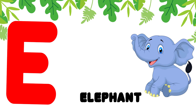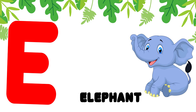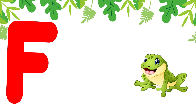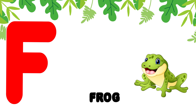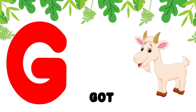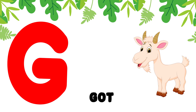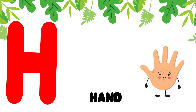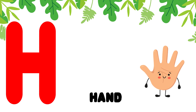E is for elephant. E, elephant. F is for frog. F, frog. G is for goat. G, goat. H is for hand. H, hand.